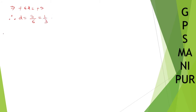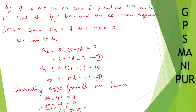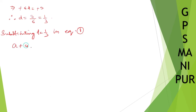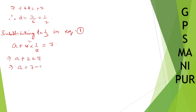Now substituting d equal to one by two in equation number one: a plus 4d = 7. So, a plus 4 into one by two equals 7. Four and two cancel giving a plus 2 is equal to 7. Therefore, a is equal to 7 minus 2, which is 5.